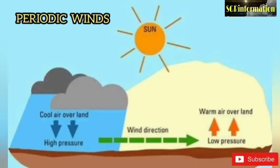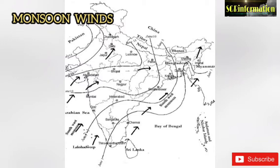Periodic winds: sometimes winds change their direction with the season or time; such winds are called periodic winds. They can be divided into monsoon winds, land and sea breezes, and mountain and valley breezes. Monsoon winds: the monsoon is a seasonal modification of the general planetary wind system; monsoon winds are most powerful in India and China.